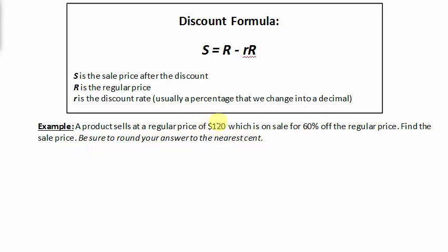A product was marked $120 and now it's on sale for 60% off, which sounds like a great deal. We have to find how much it would be when we got to the register—the sale price after the discount.